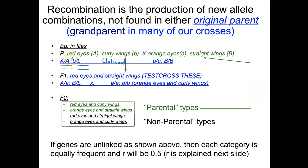If this is the female parent, there are two copies of the dominant allele and two copies of the recessive allele on this other chromosome. The red eye allele is dominant, the orange eye allele is recessive, the curly wing allele is recessive, and the straight wing — the normal wing — is dominant.